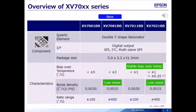The products to the right, XV-7011 and XV-7021, are more stable in terms of bias over temperature. For lower noise, XV-7081 and XV-7021 provide approximately half the noise of XV-7001 and XV-7011.